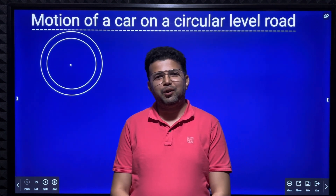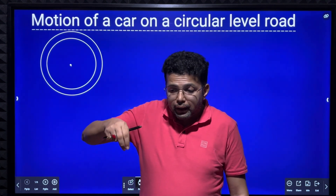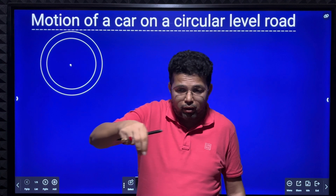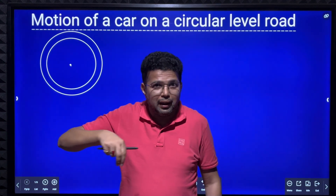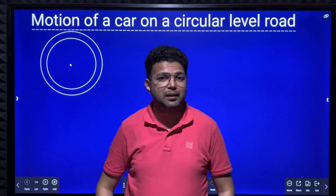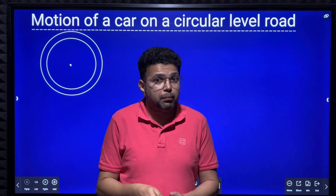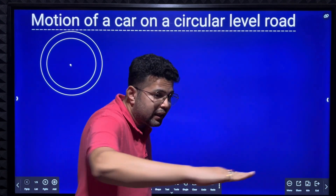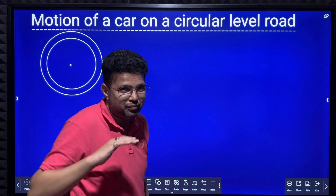Hello dear students. In this small video, we are going to learn dynamics of a car moving on a circular level road and we are going to derive an expression for maximum speed with which a car can take a turn in a circular level road.